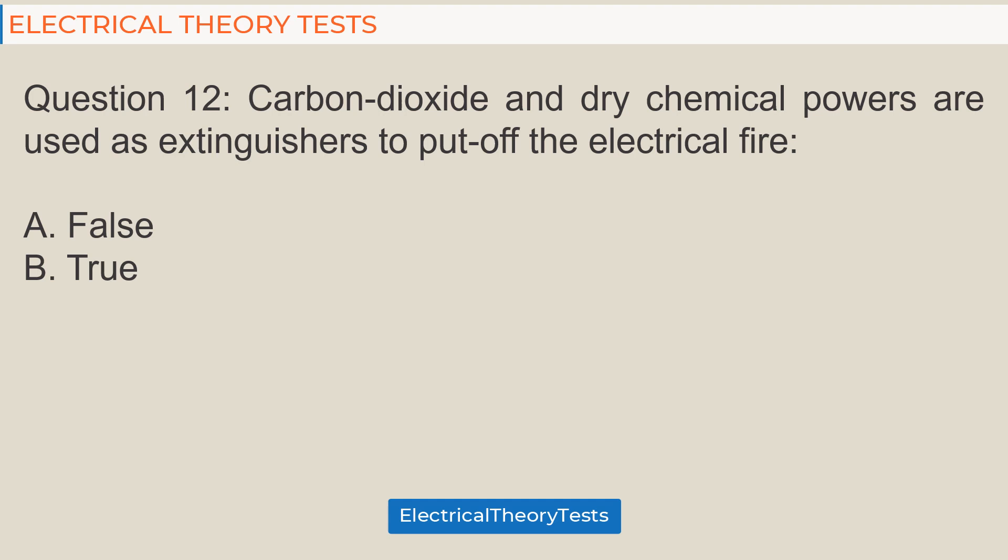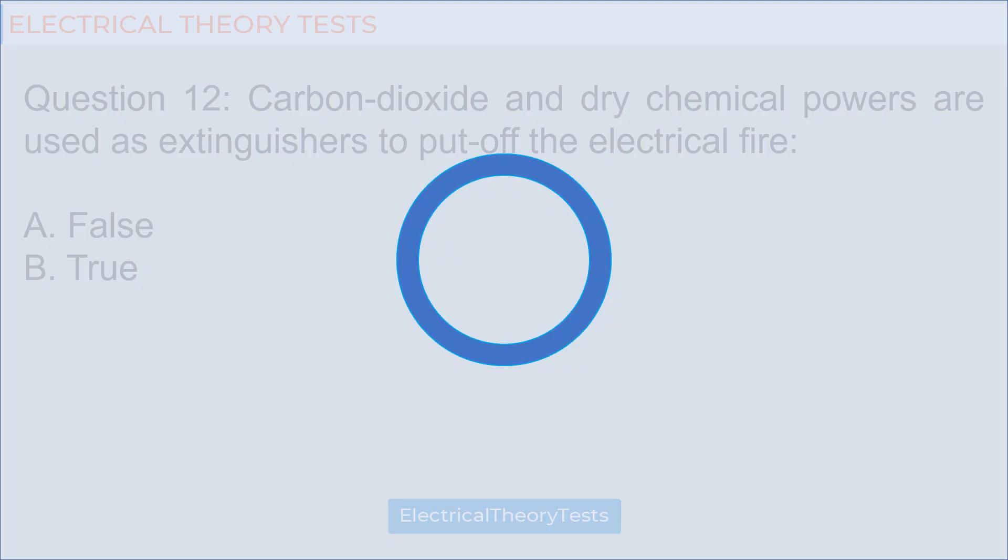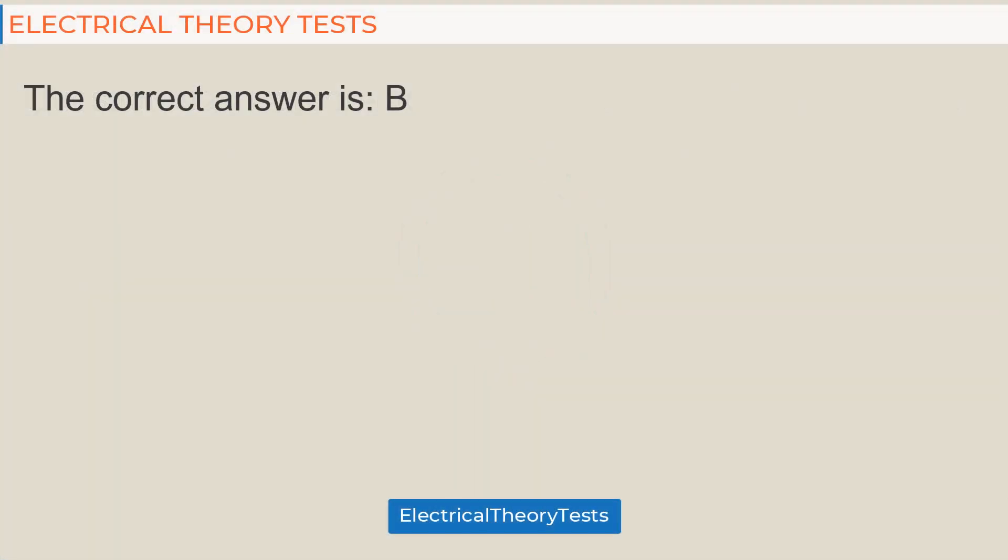Question 12: Carbon dioxide and dry chemical powers are used as extinguishers to put off the electrical fire. A. false, B. true. The correct answer is B.